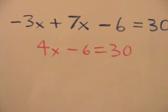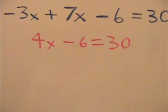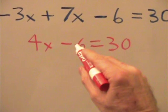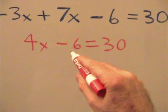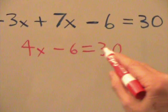Now what we have to do is isolate our x. So we're going to do the opposite operation of what we have here. This is negative 6, so we're going to add 6 to both sides.